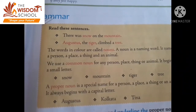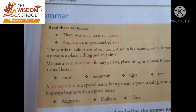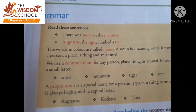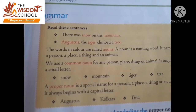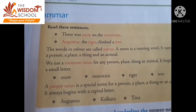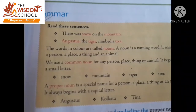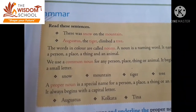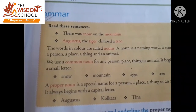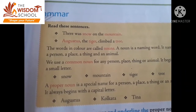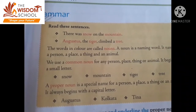Nouns kya hota hai, baccha? Noun is a naming word. Nouns ek naming word hai — ek word ka name hai. Name of person, place, animal, aur thing. Kisi bhi person ka, place ka, animal ka aur thing ka name kya hai? Nouns hai.